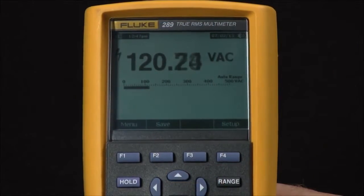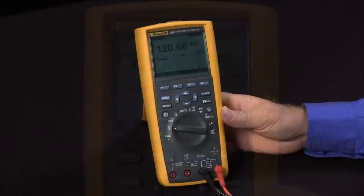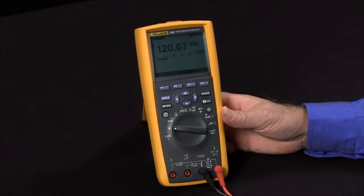How do we log readings on the Fluke 289? There are many times when you might want to log data over time to troubleshoot an intermittent problem